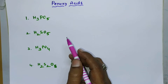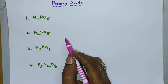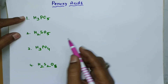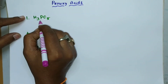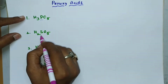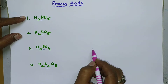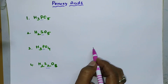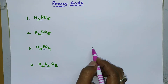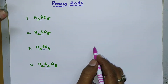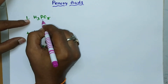In order to know that, first we have to calculate the oxidation states of the central elements. Here we have to calculate the oxidation state of phosphorus, and here for sulfur, and here phosphorus, and here again for sulfur. I showed you in the previous video how to calculate oxidation states for several molecules — you can go through that video.